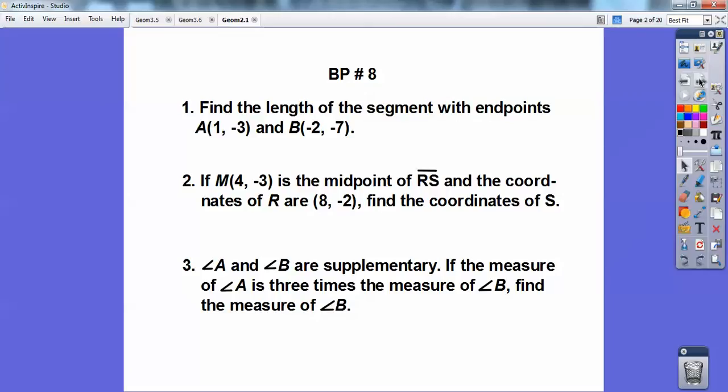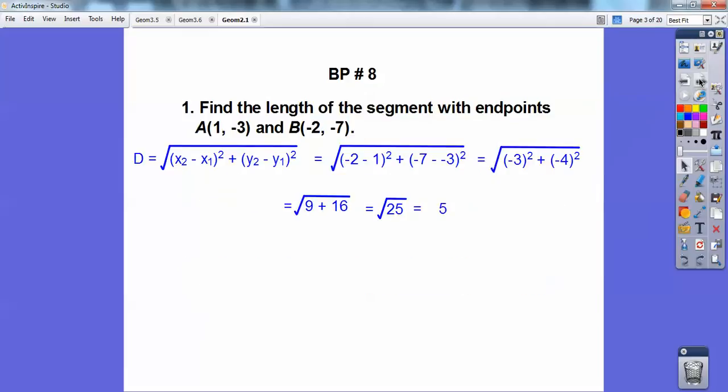Find the length of the segment with endpoints A(1, -3) and B(-2, 7). You need to know distance formula. So distance formula is the square root of you subtract the two x's and square it, and you add the subtraction of the two y's squared.